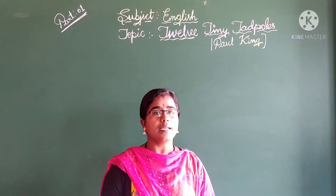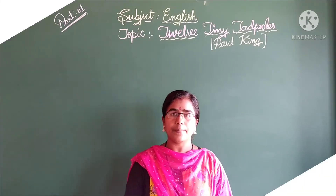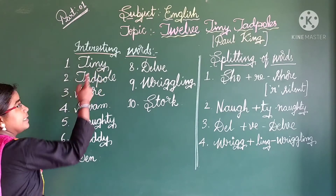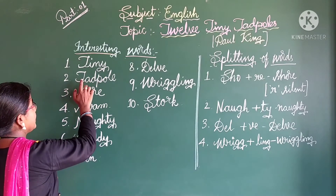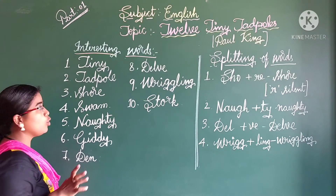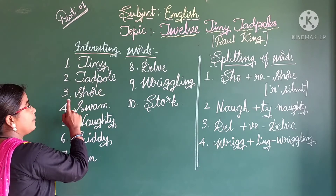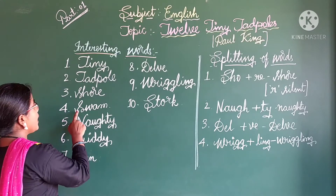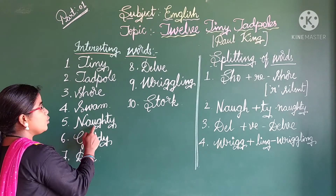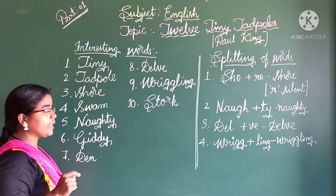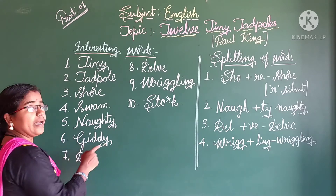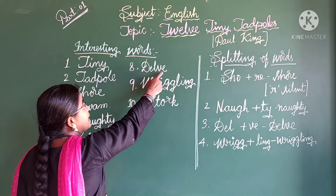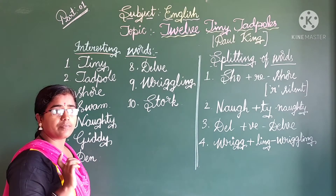Please take out your classwork book and pencil and write down all these words. Interesting words: Tiny - T-I-N-Y. Tadpole - T-A-D-P-O-L-E. Shore - S-H-O-R-E. Swam - S-W-A-M. Naughty - N-A-U-G-H-T-Y. Giddy - G-I-D-D-Y. Delve - D-E-L-V-E.